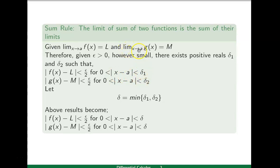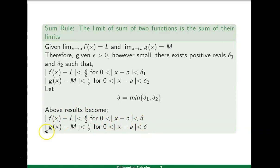For limit x approaches to a of g(x) equal to m, by the epsilon-delta definition, for given epsilon greater than zero however small, there exists delta-two depending upon epsilon such that |g(x)−m| less than epsilon/2 for zero less than |x−a| less than delta-two. We want to use these conditions together, so we define delta to be the minimum of delta-one and delta-two. The first condition becomes |f(x)−l| less than epsilon/2 and the second becomes |g(x)−m| less than epsilon/2, both for zero less than |x−a| less than delta.